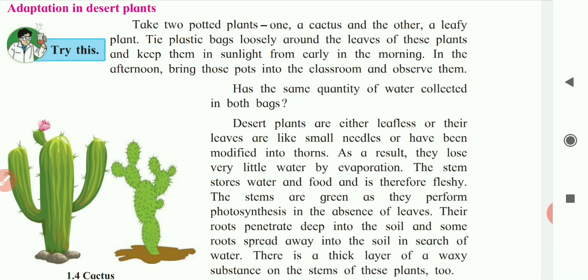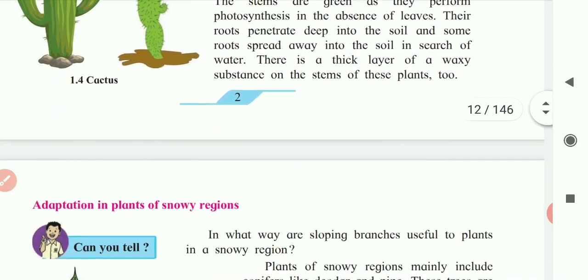The stem of these desert plants is green in color, which means it contains chlorophyll and performs the function of photosynthesis. The food and water are stored in the stem, causing it to become fleshy. The leaves are also modified into thorns to protect the plant from animals. This is the adaptation found in desert plants.